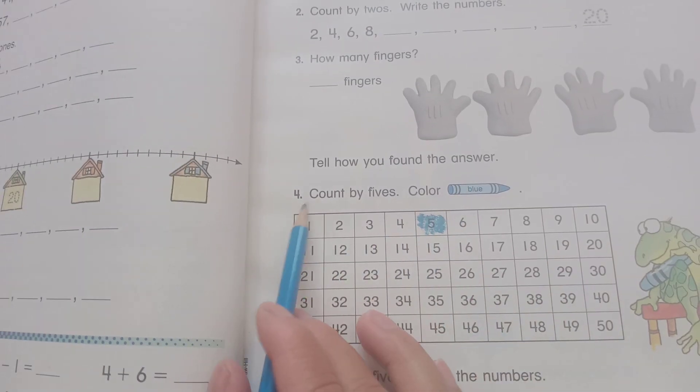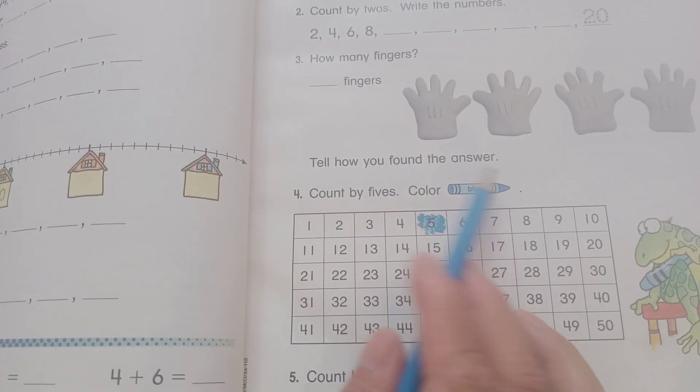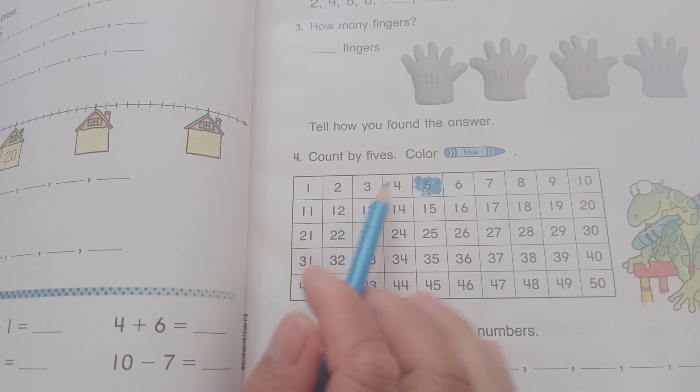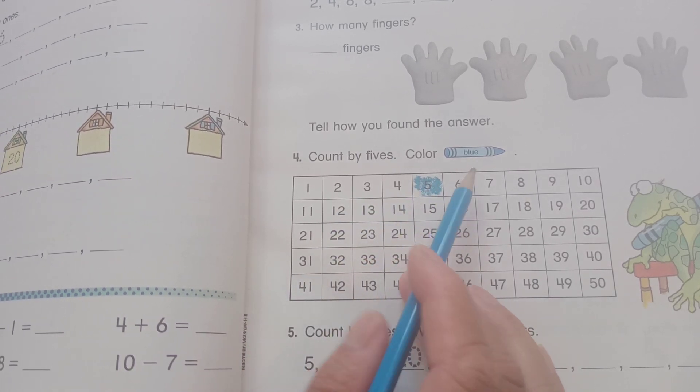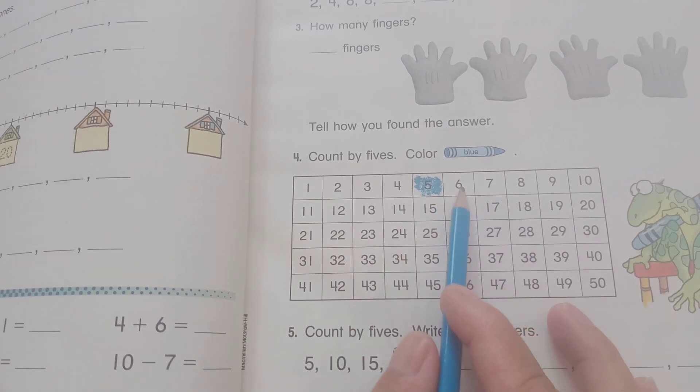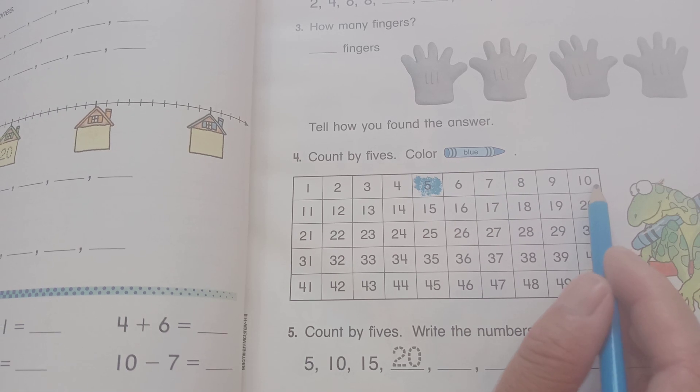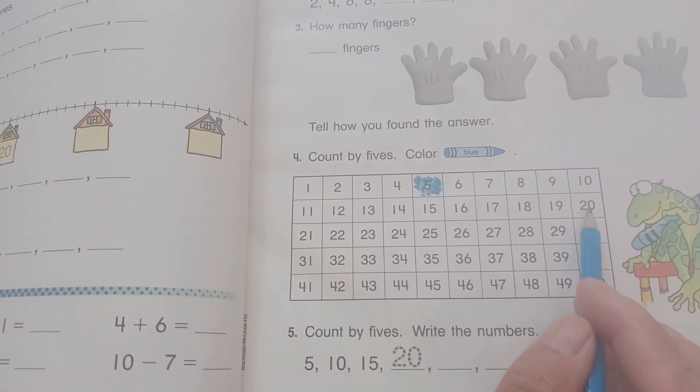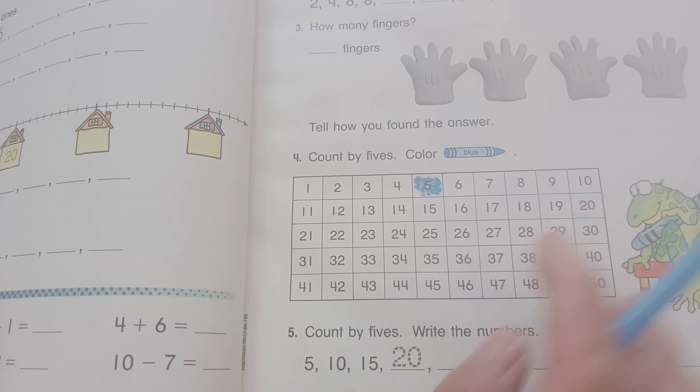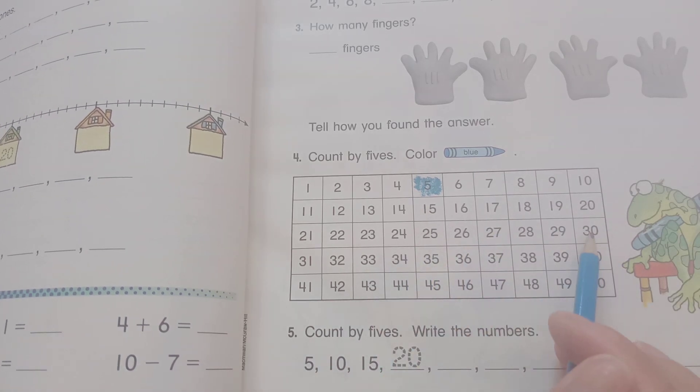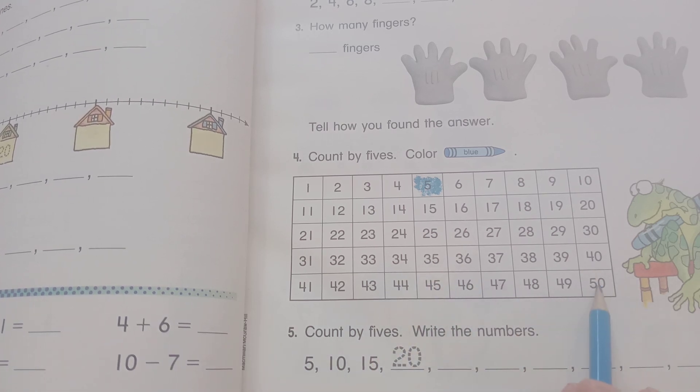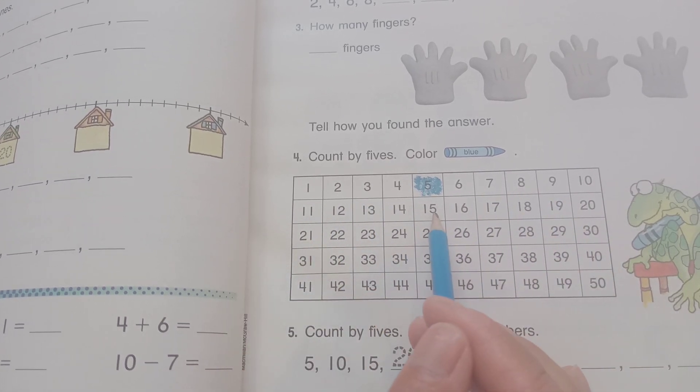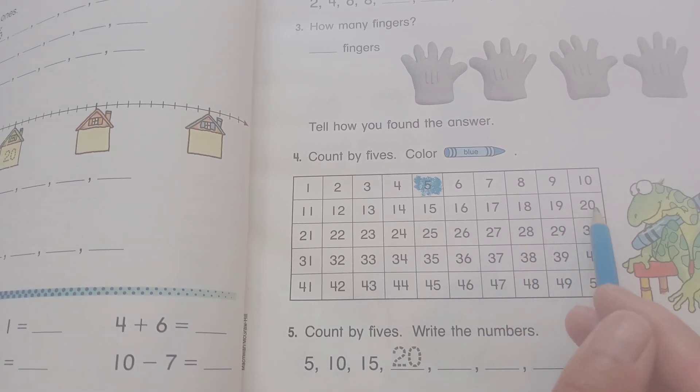Number four, count by five, color it blue. Count by five. One, two, three, four, five - you can color blue. Count by five: six, seven, eight, nine, ten. And so now twenty-five, thirty, thirty-five, forty, forty-five, fifty.